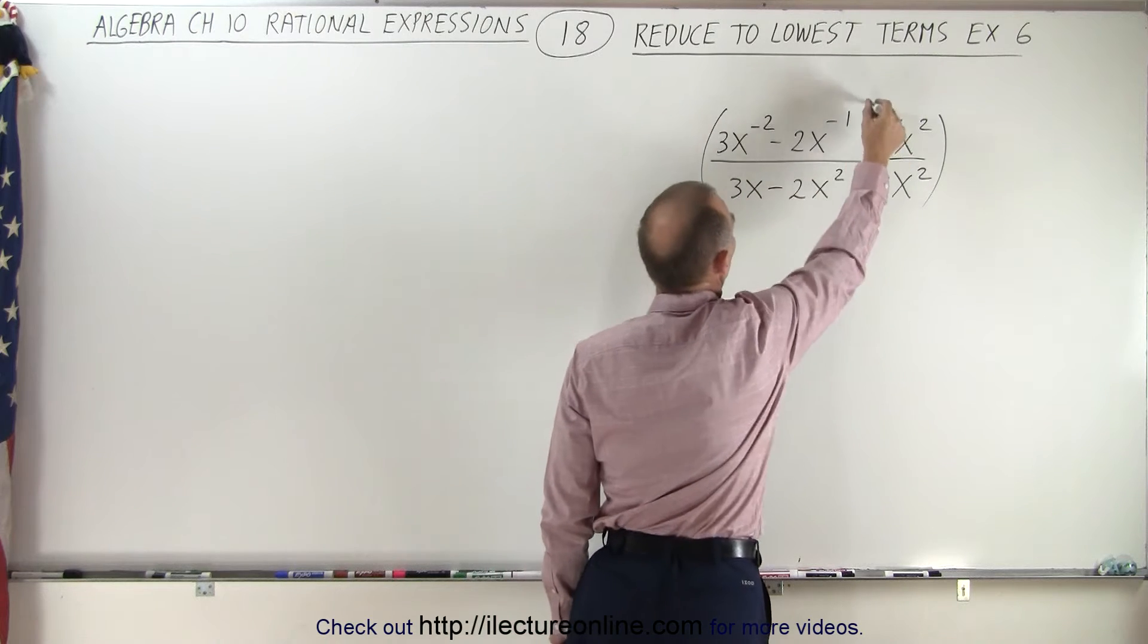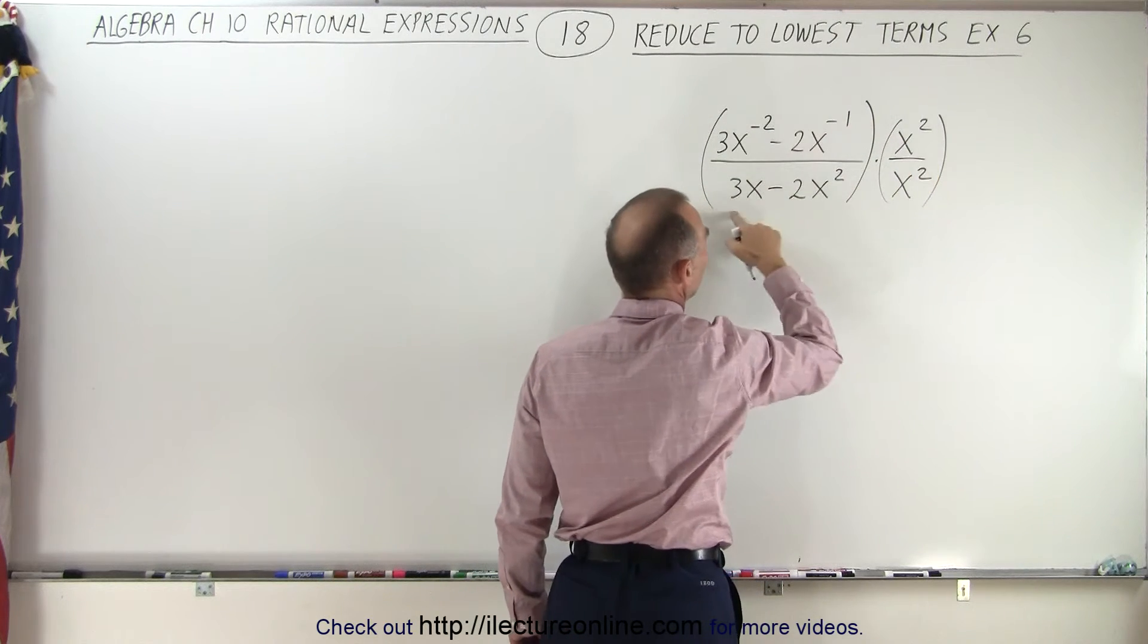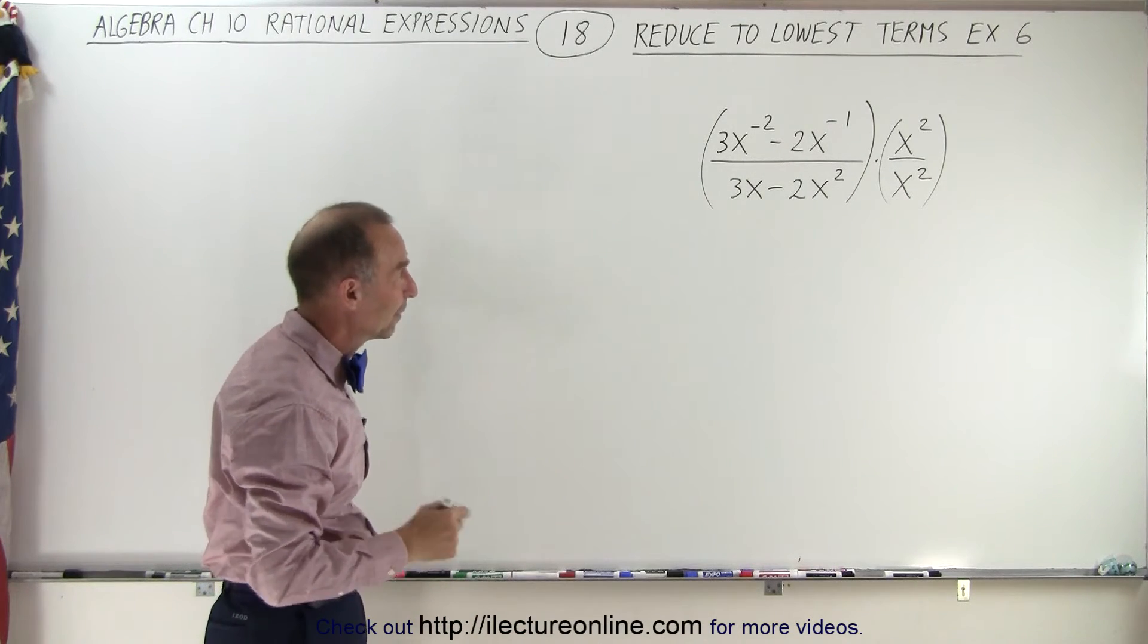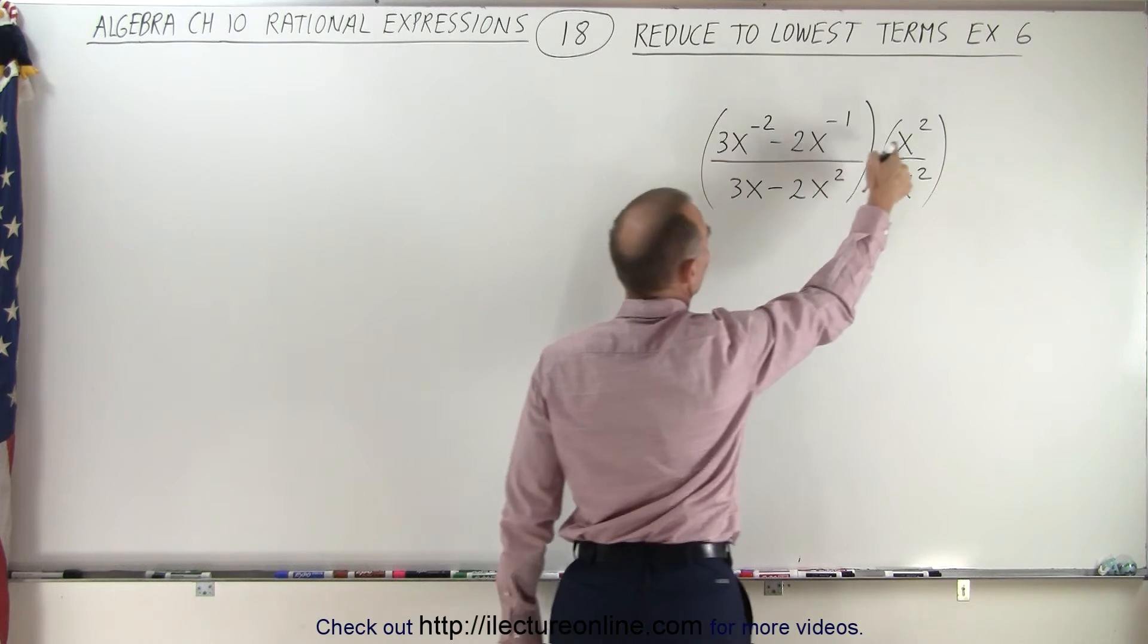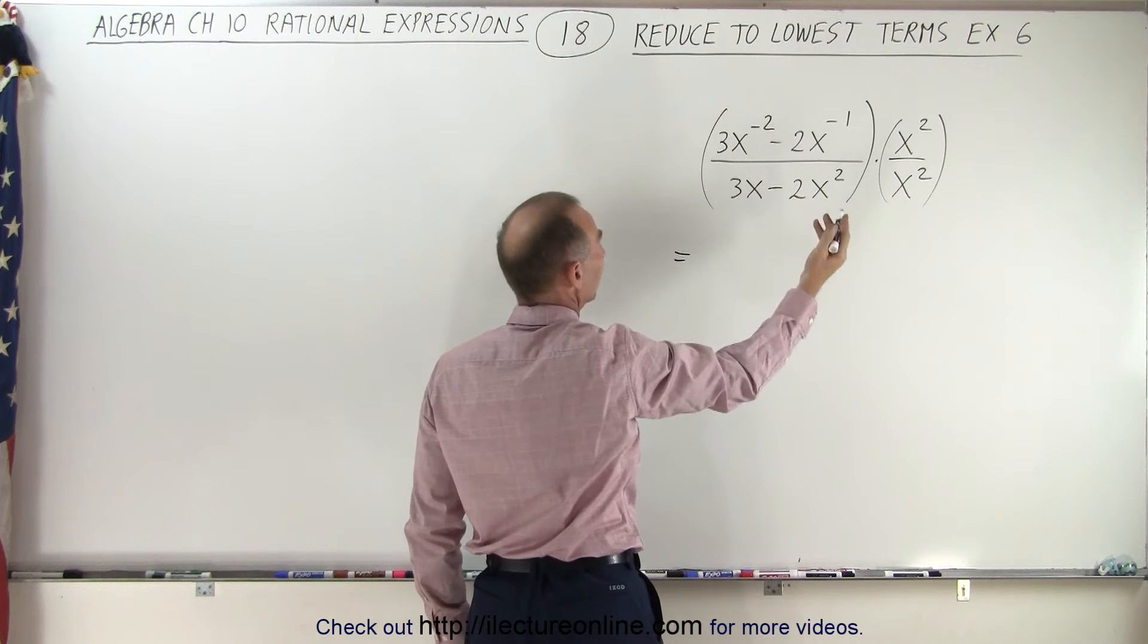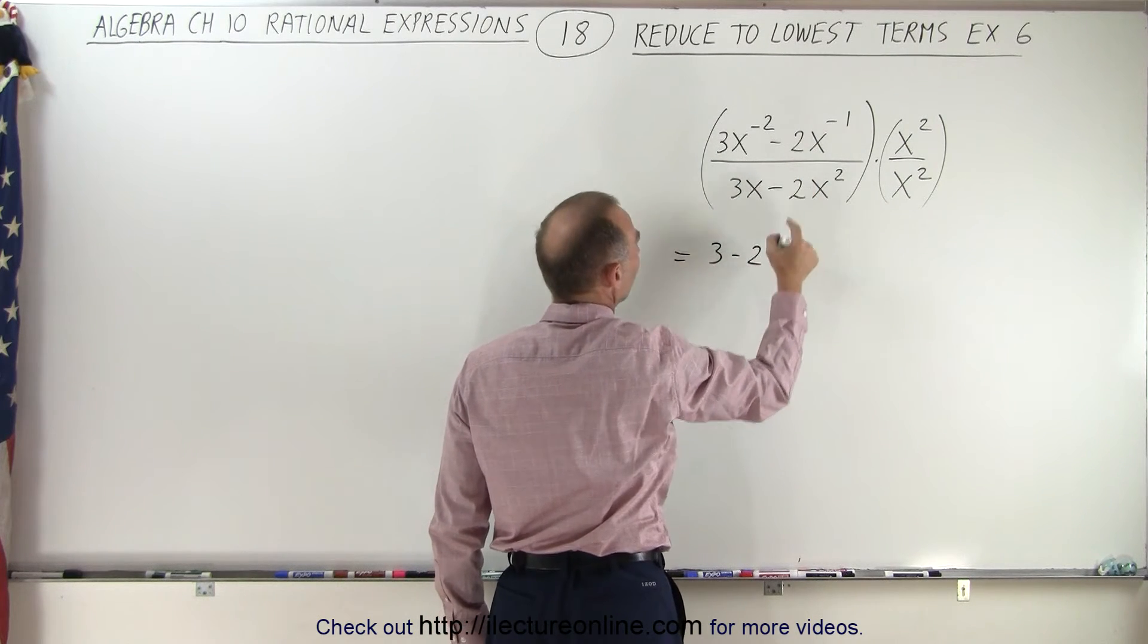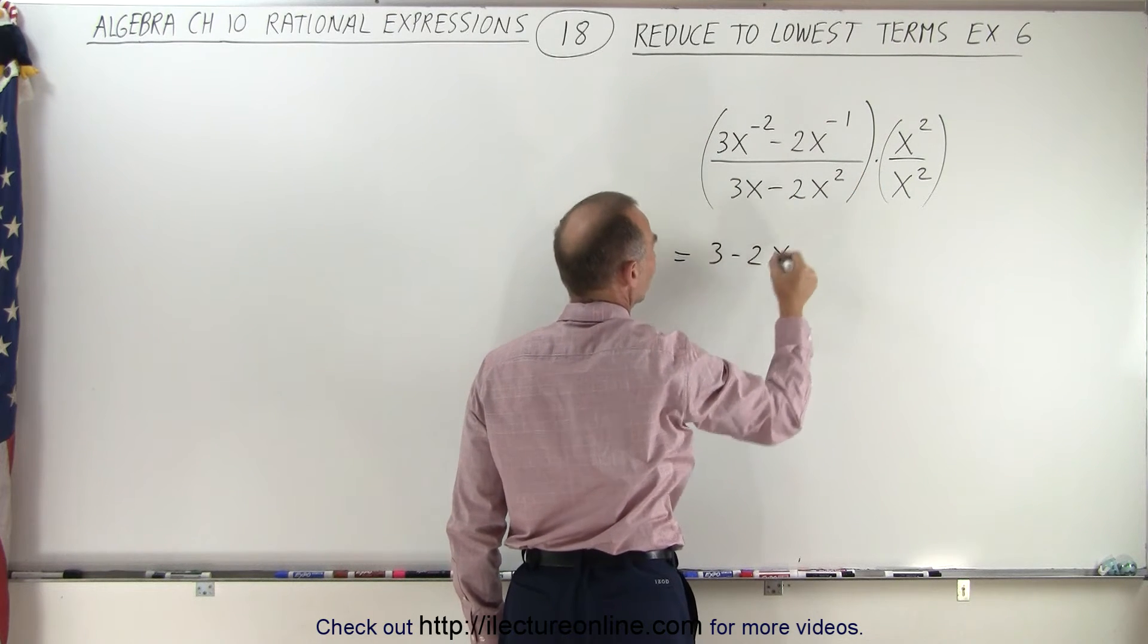We're going to multiply the numerator by x to the second power, and we're going to do the same with the denominator, multiply times x to the second power. If we do that, we get the following: x to the negative 2 times x to the positive 2. When we add exponents, we get x to the 0, which means x disappears. We simply get a 3. And here we get minus 2 times x to the minus 1 times x to the second power is x to the first power.